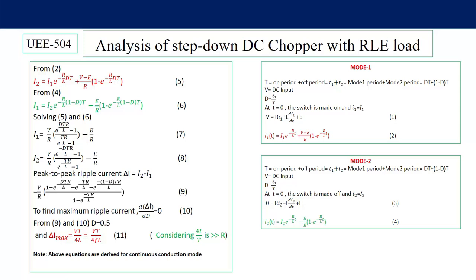The maximum ripple current is ΔI_max = VT/(4L) = V/(4fL), where f is the switching frequency. This is a very important equation: from it you can find the maximum ripple current or design the inductor size knowing the other parameters. A key conclusion is that the inductor size decreases at higher switching frequency, which is a major advantage. High-frequency devices such as MOSFETs and IGBTs are therefore used to reduce inductor size.